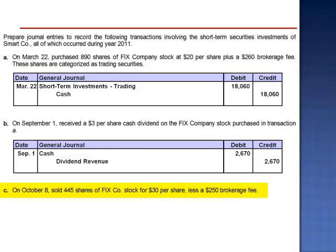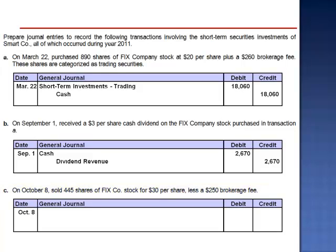Letter C: On October 8th, sold 445 shares of FIX Company stock for $30 per share, less a $250 brokerage fee. The debit to cash is $13,100, which is the 445 shares of stock at $30 per share — $13,350 — less the $250 brokerage fee.